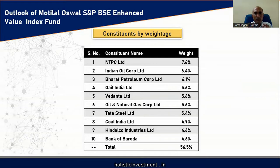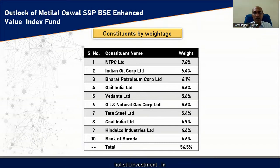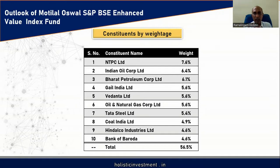The BSE Enhanced Value Index is a factor-based indexing method. Instead of human intervention, they use a few observable data points like P/E ratio, P/B ratio, and P/S ratio to select stocks. This is factor-based investing, which uses observable data. Other factors can be quality, momentum, or simple value instead of enhanced value. When you add new factors to your portfolio management, your risk-adjusted return in theory is supposed to go up.